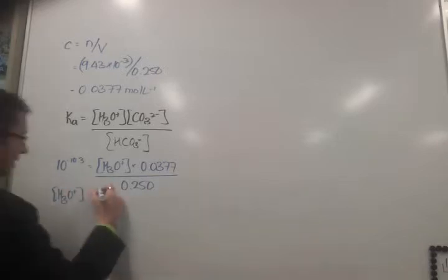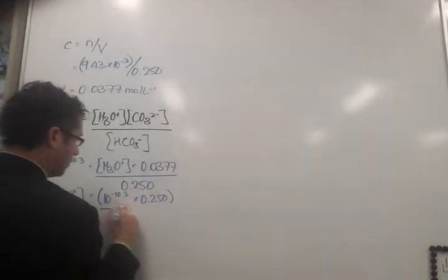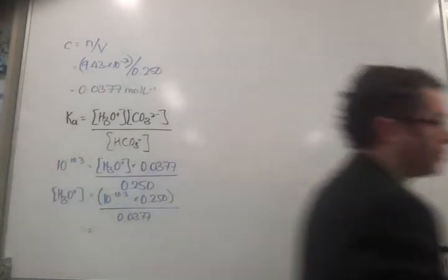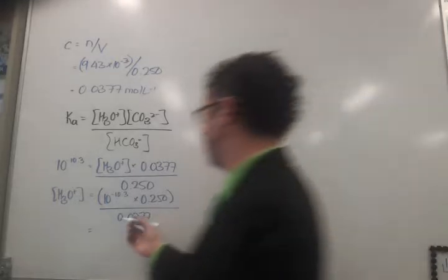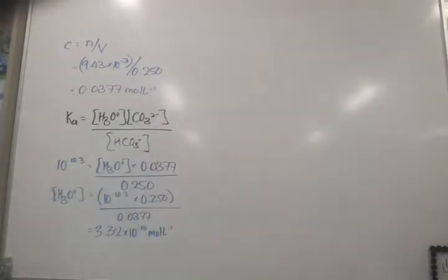And so now all I have to do is rearrange this equation to make hydronium the subject. So, hydronium is going to be 10 to the power of negative 10.3 times 0.250 divided by 0.0377. So, if you're not sure how I did that mathematically, maybe do it one step at a time. And then see how we work it out. And I've got 3.32 times 10 to the negative 10 moles per liter. Then it's just a case of going from this to pH that I need, probably seeing why these are often excellence questions. There's so many steps in it. It's just remembering what to do.